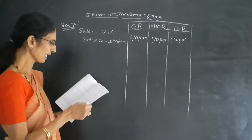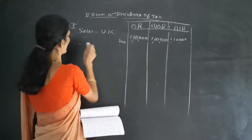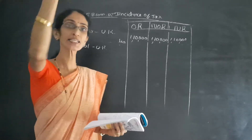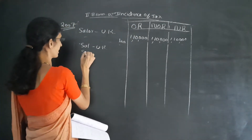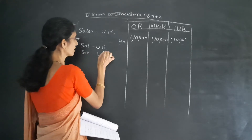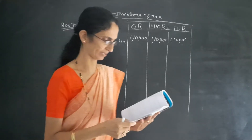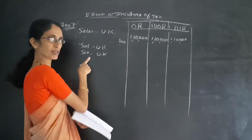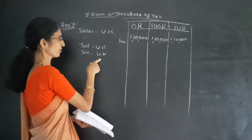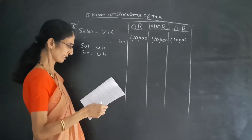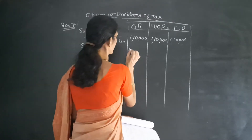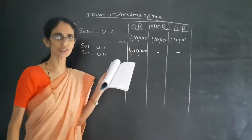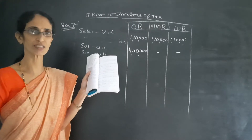The second transaction is salary in UK for services rendered in UK. Since the income is due in a foreign country and received in a foreign country, the first column is yes, then the other two columns are dash, dash. The amount is 4 lakh. It is foreign income because it is due in UK and the service is also in UK.